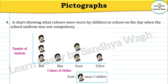Question number four: A chart showing what colors were worn by children to school on the day when the school uniform was not compulsory. The children wore red, green, and yellow colored clothes. The scale shown here: one child symbol means five children.